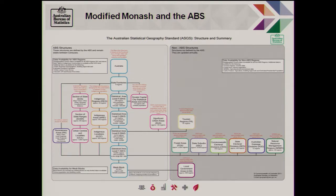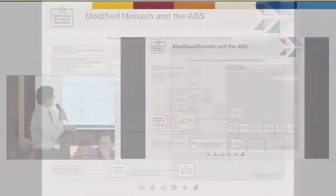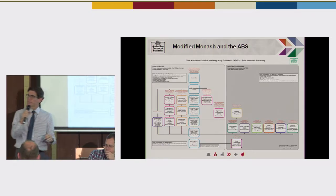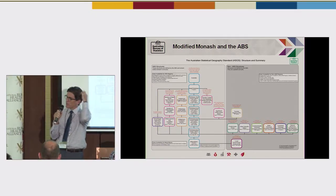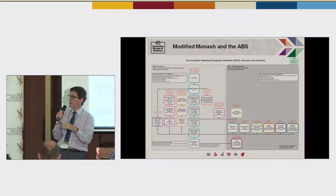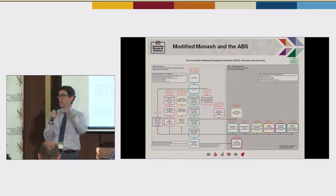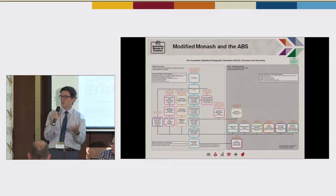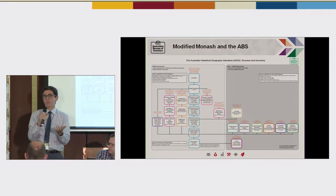SA1s are between 200 and 800 dwellings, and there are about 54,000 of them in Australia, so they're quite a small unit. They're below a suburb, quite a small area especially in urban areas. In regional areas they can be bigger, to make sure we get enough population so the information we produce doesn't need to be confidentialised to the point where it's useless.